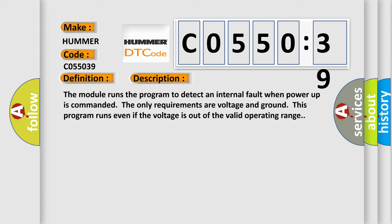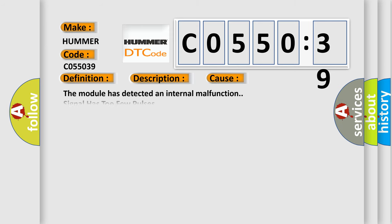This diagnostic error occurs most often in these cases. The module has detected an internal malfunction signal has too few pulses. This subtype is used for failures where the control module measures too few pulses, e.g., position is calibrated in counts from one extreme to the other.